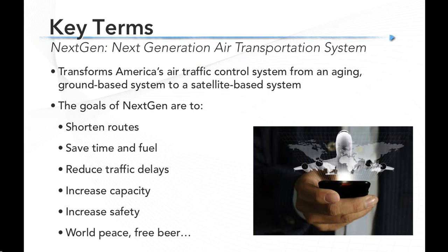NextGen is an umbrella for a number of efforts to modernize the U.S. national airspace — shortening routes, saving time and fuel, reducing delays, increasing capacity and safety. ADS-B is only one of five major NextGen elements, but there's plenty of depth on just that one term. The part we'll be focused on tonight is really ADS-B.